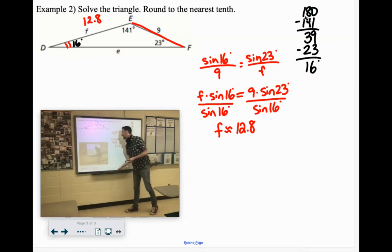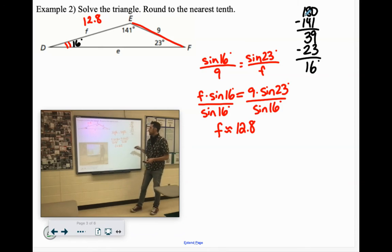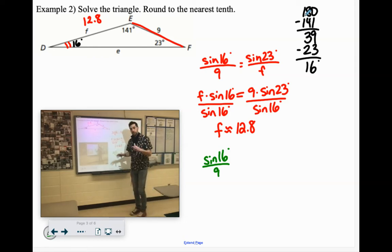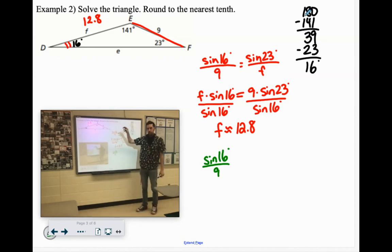And now we've got to find side E. So let's say sine of 16 over 9 again. Now you can use the sine of 23 over F is 12.8. That's approximated, so that'll work fine. But let's go with what we know for sure, what they gave us. So sine of 16 over 9. We're looking for E, and that matches with 141 degrees. Sine of 141 degrees over E.